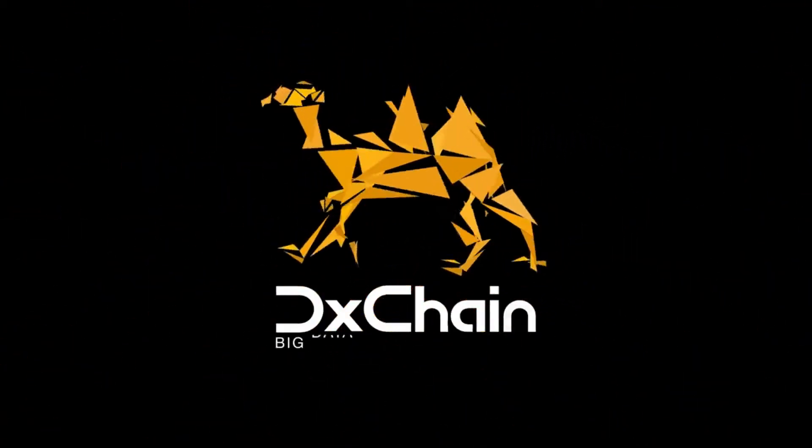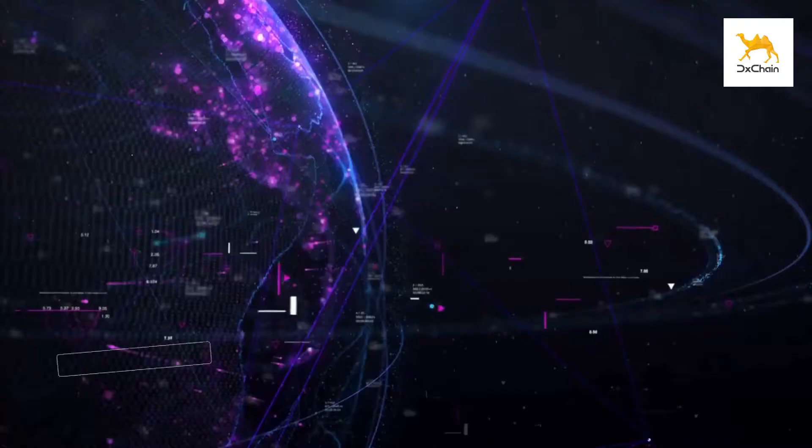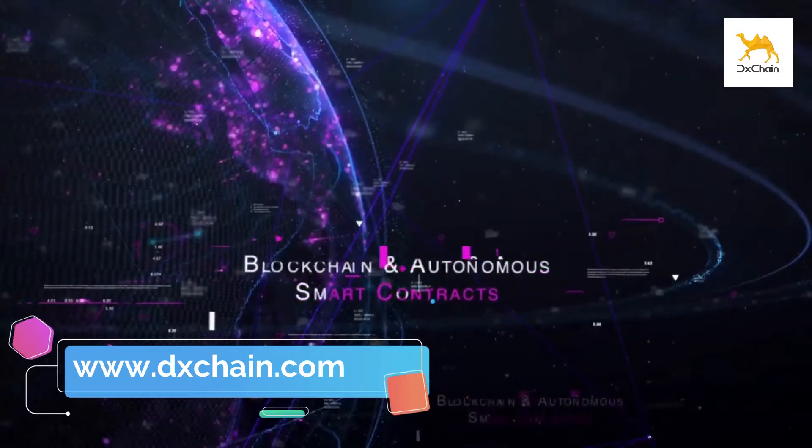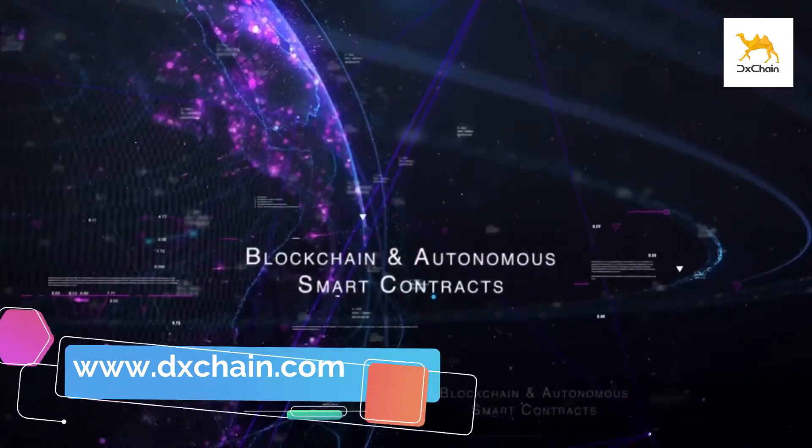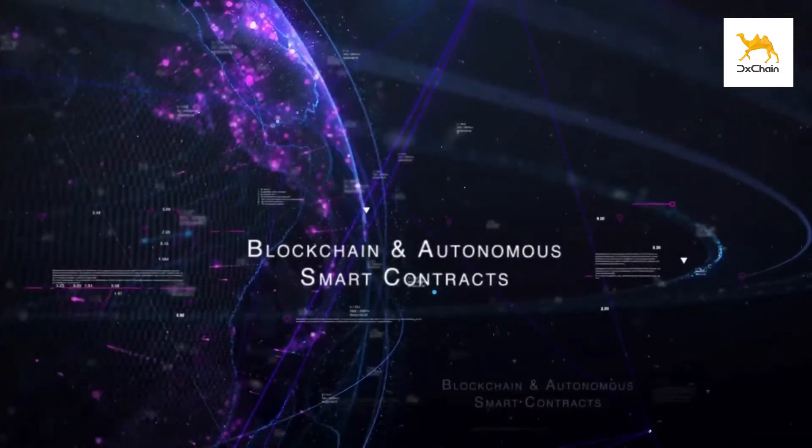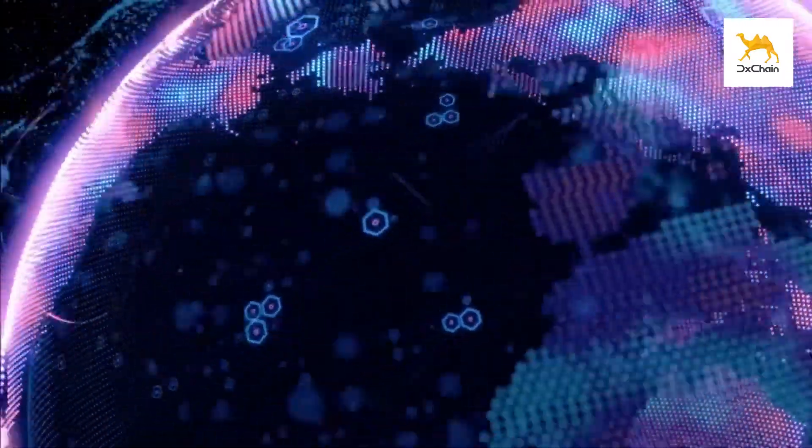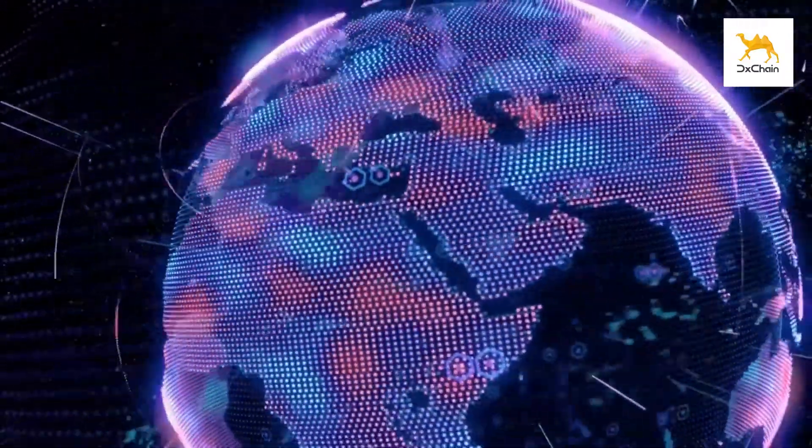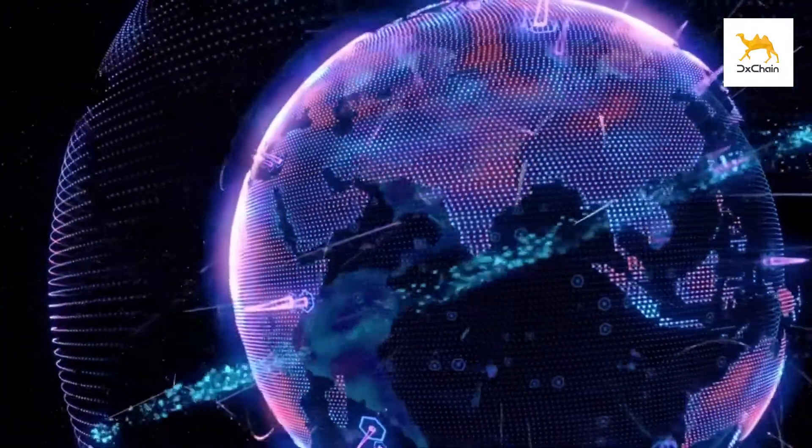DX Chain is developing a decentralized big data and machine learning network. The project is based on the premise that data is valuable and data creators should be able to own and benefit from their own data. The team aims to tackle major big data issues such as privacy, ownership, and security while supporting business intelligence and machine learning applications.